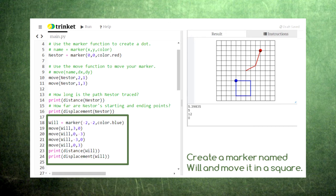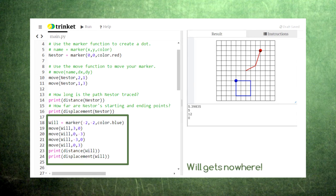At the end of this path, Will probably feels tired having moved a total of 12 units. But despite all his effort, his displacement is zero because he ends at the same location where he begins.